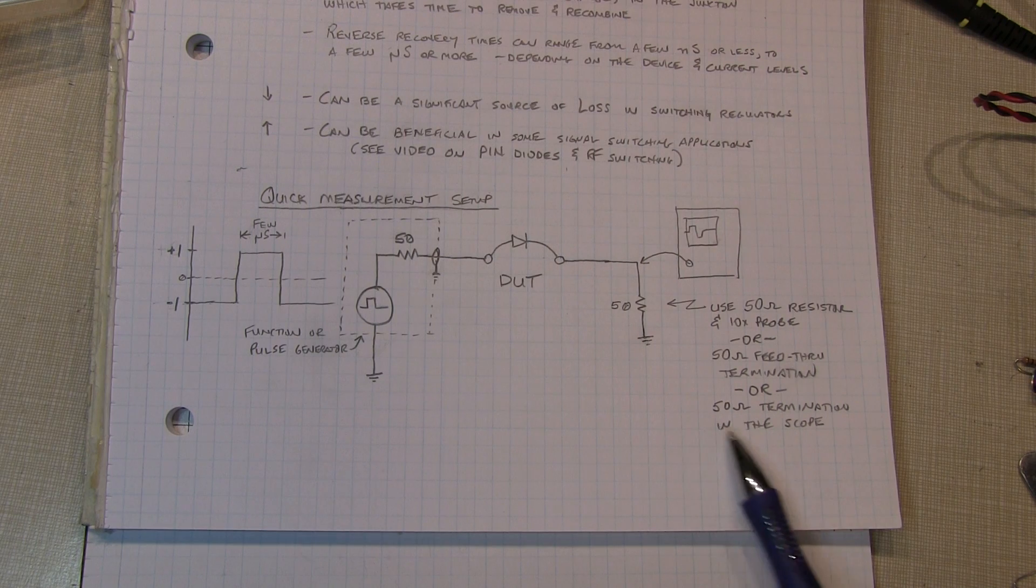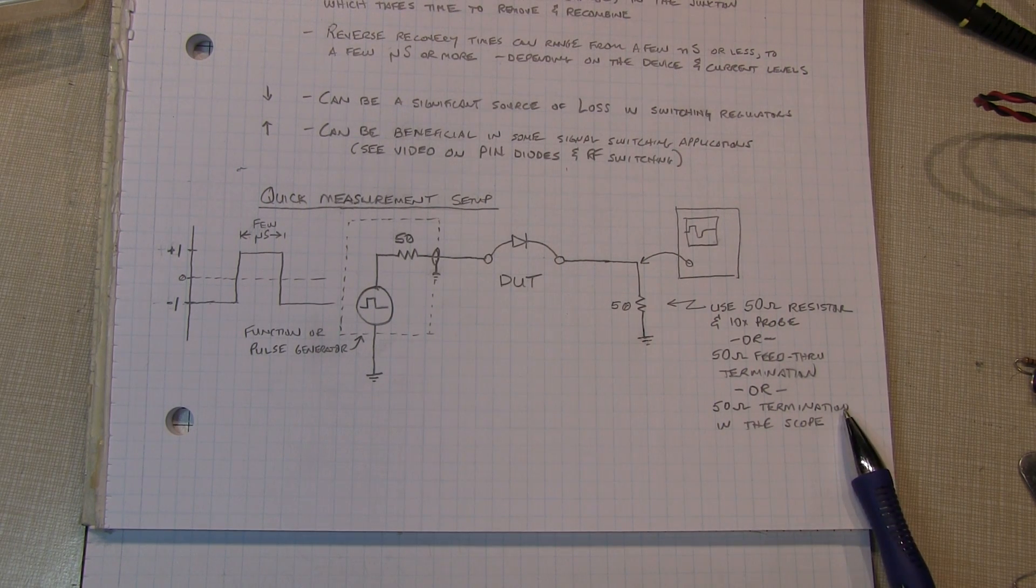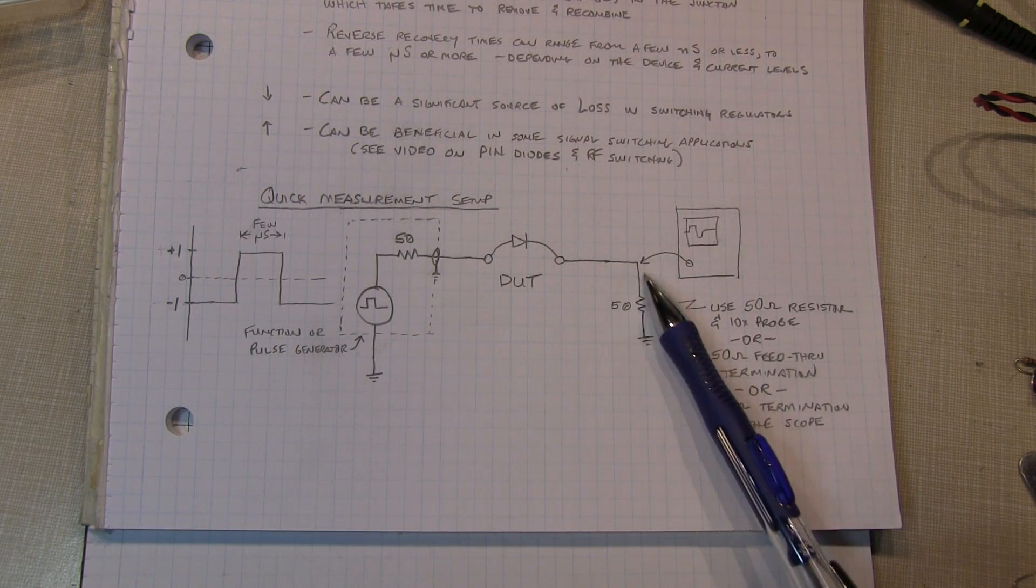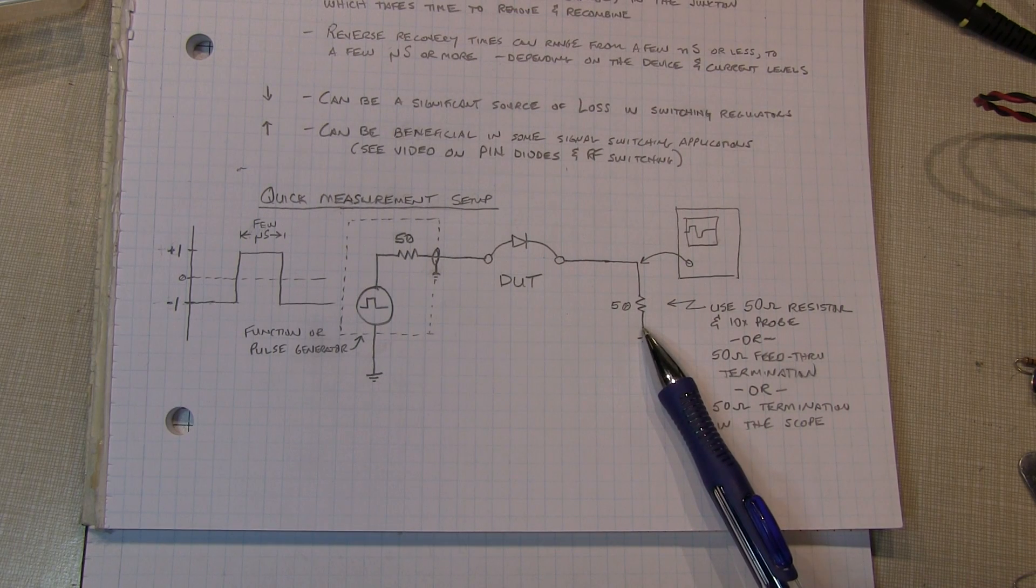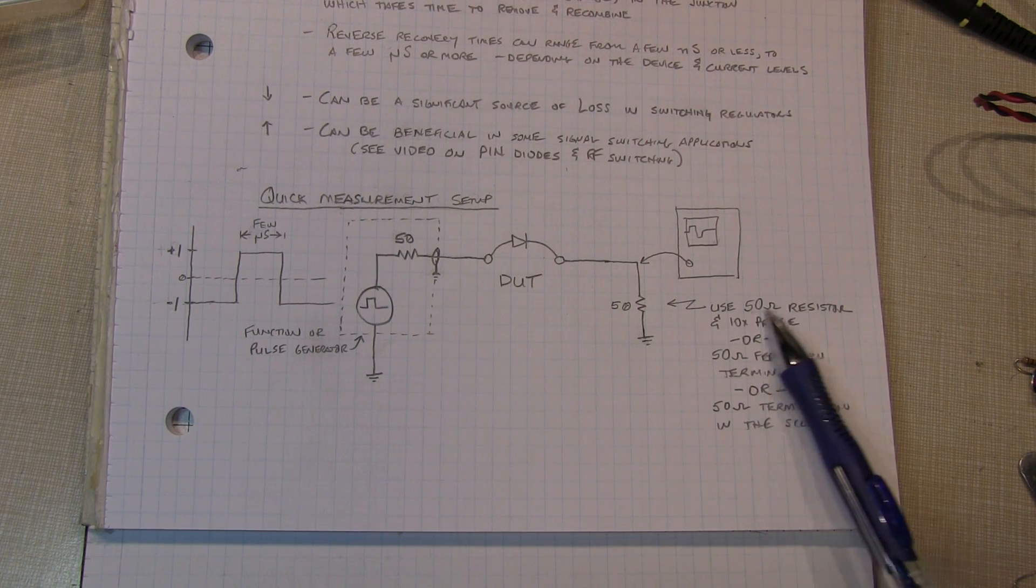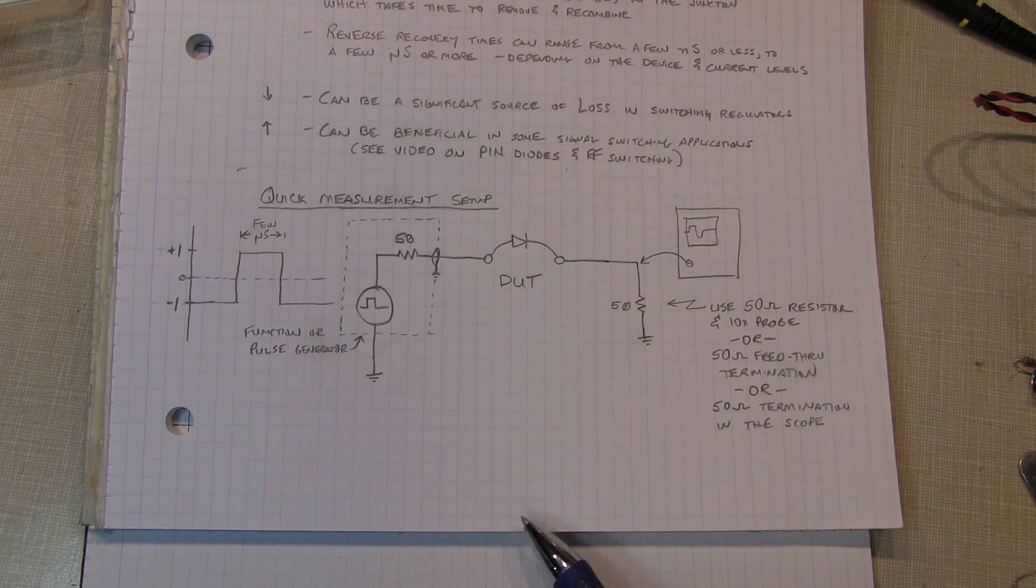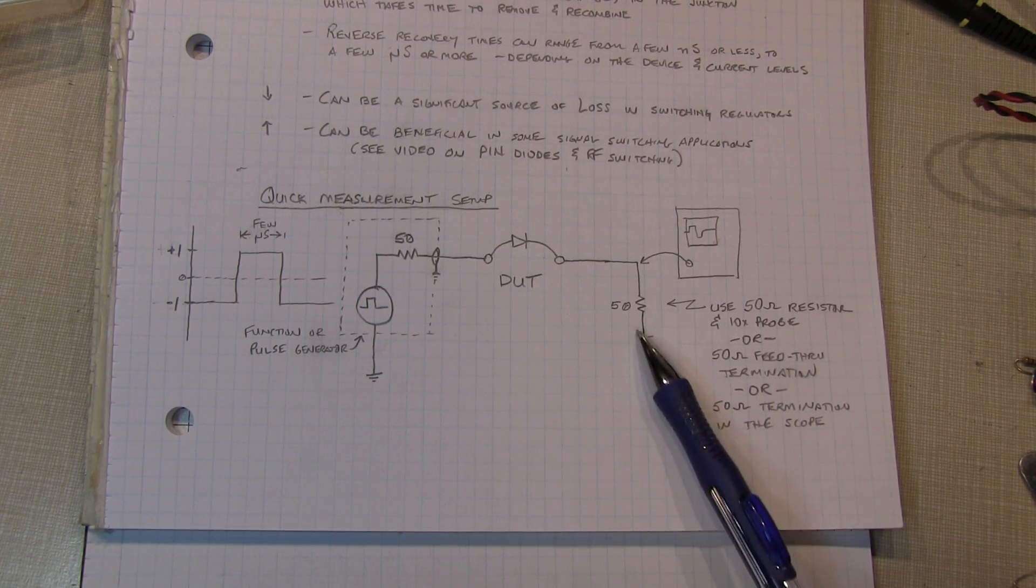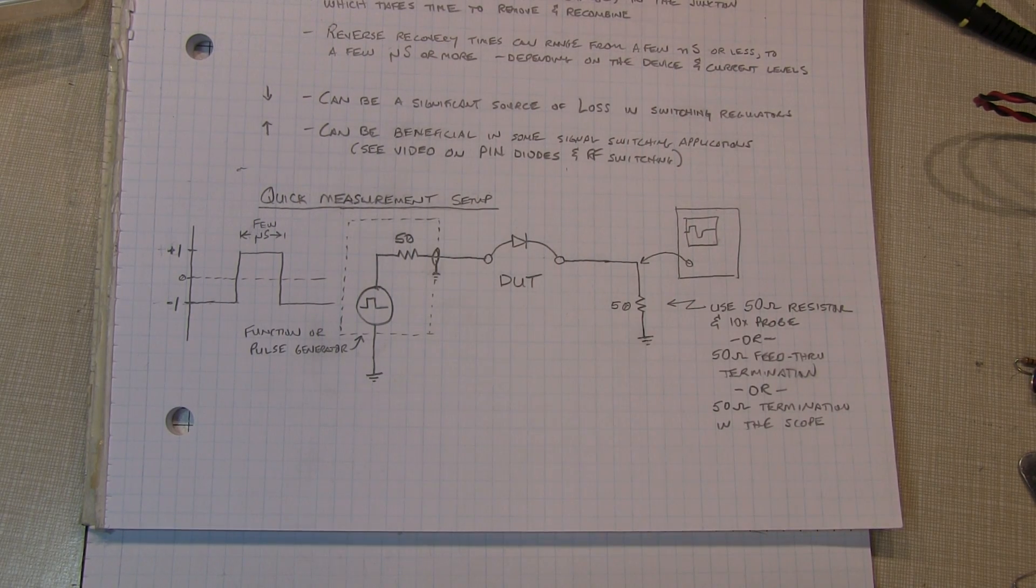But if your scope doesn't have a 50 ohm termination that you could turn on, you can use a real 50 ohm termination, a 50 ohm resistor, and probe it with say a 10x probe with your scope, or use a 50 ohm through termination right at the input of the scope.